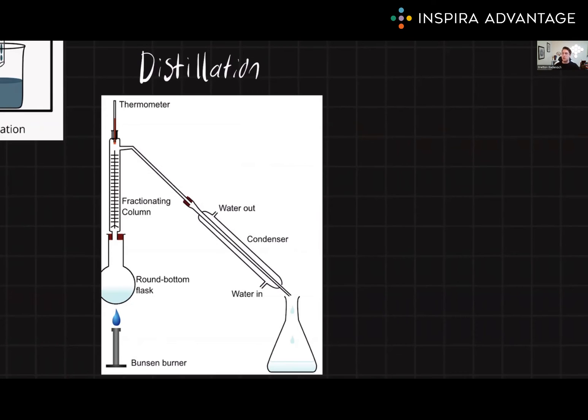Simple distillation is a technique used to separate liquids with boiling points that are under 150 degrees and at least 25 Celsius apart. During simple distillation, we heat the mixture and the liquid at the lowest boiling point vaporizes first and is then collected as the distillate. Simple distillation is often used in organic chemistry labs for purification.